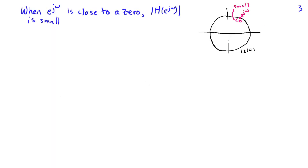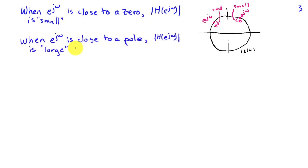Now, if e^{jω} is close to a zero, then the distance between e^{jω} and the zero is very small. Since this is in the numerator, it's going to make |H(e^{jω})| small. On the other hand, when e^{jω} is close to a pole, the distance between e^{jω} and the pole becomes small. But that distance shows up in the denominator, so as this distance approaches zero, it causes |H(e^{jω})| to become large.